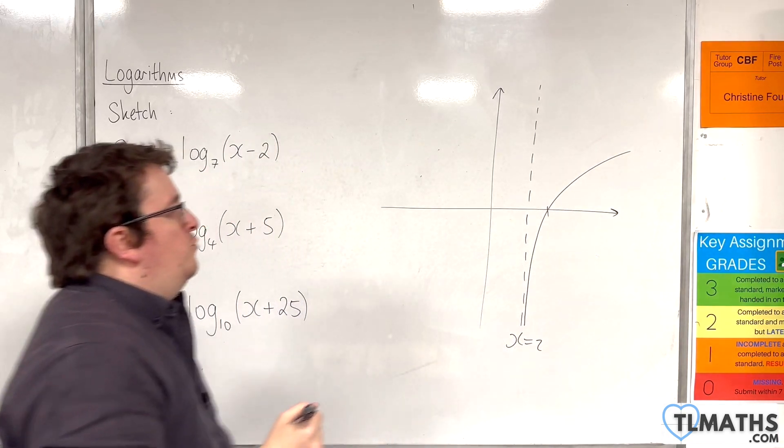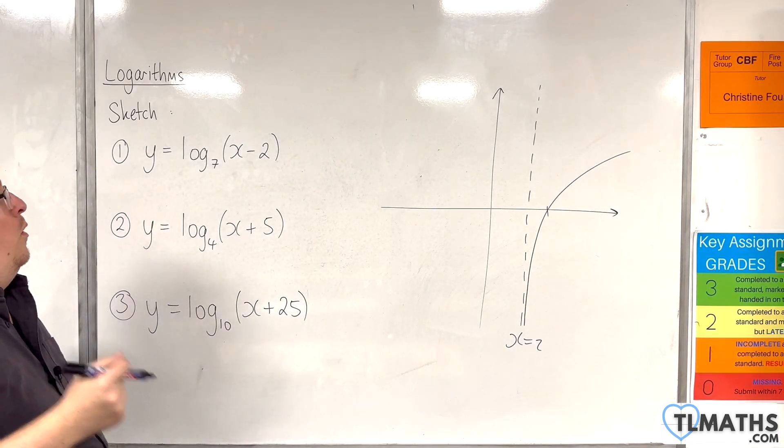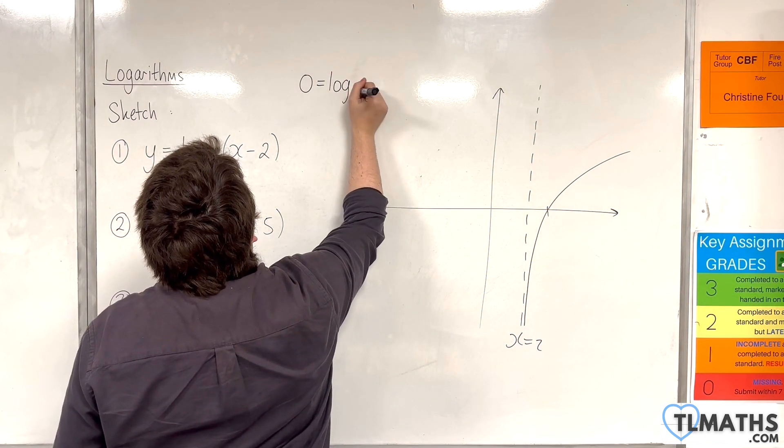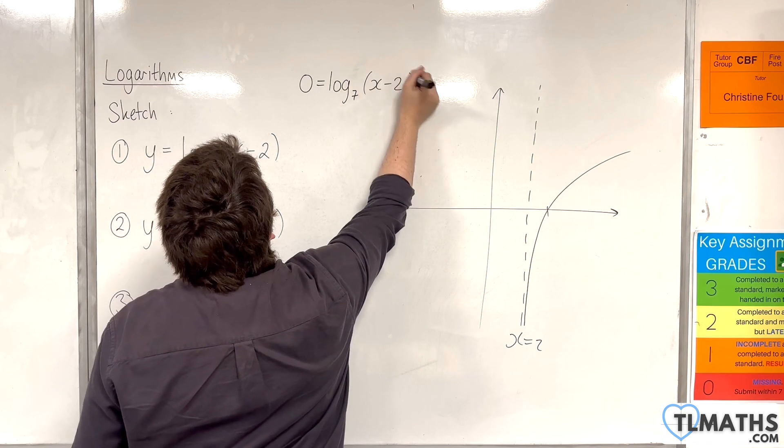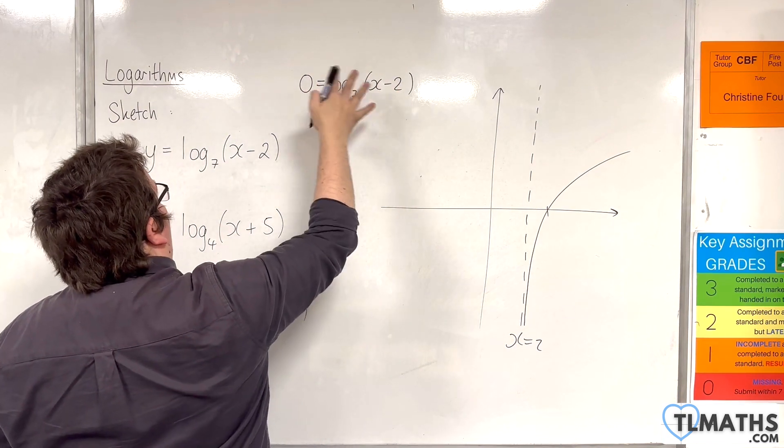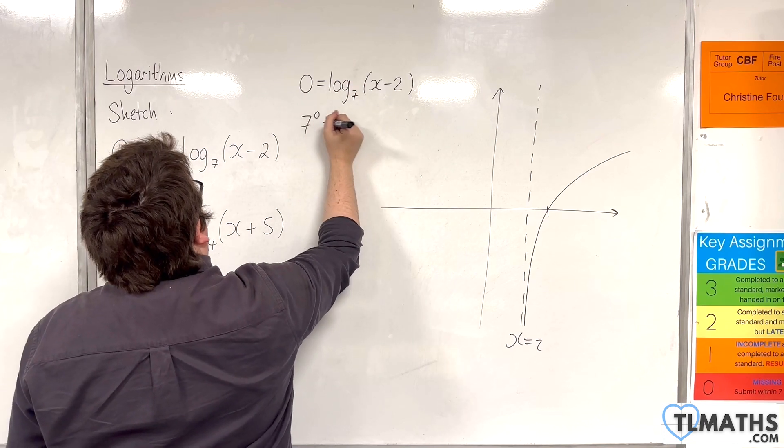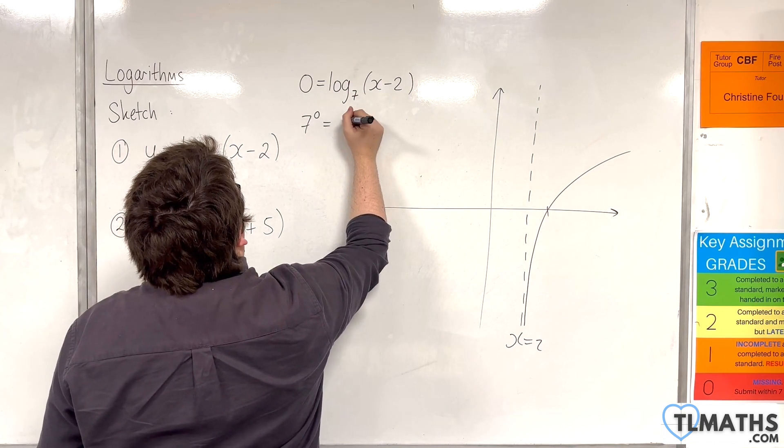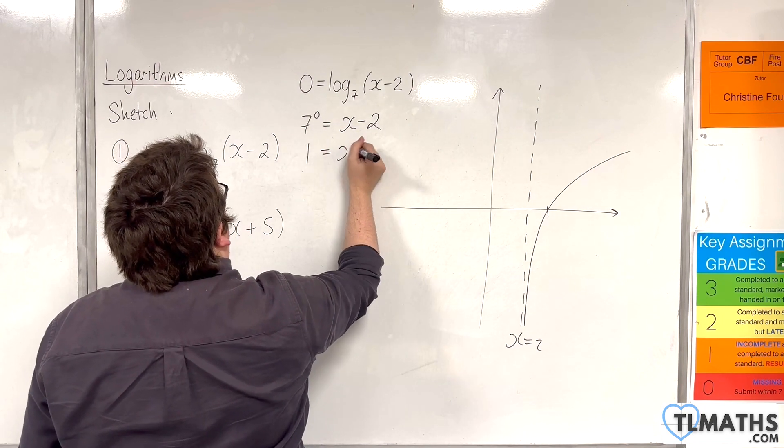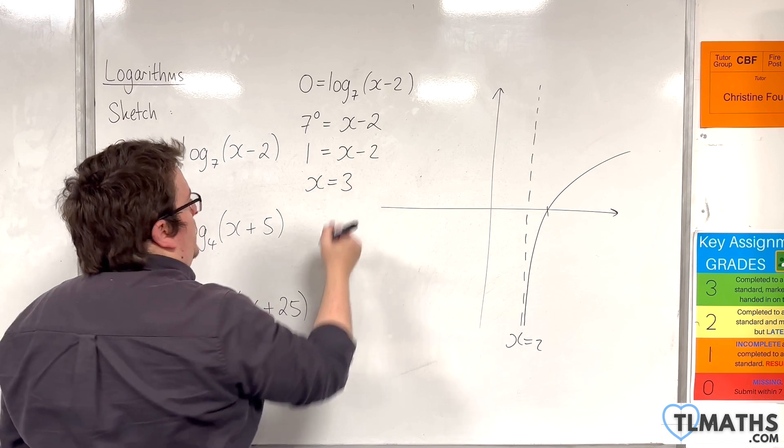And it will cross the x-axis when y is 0. So 0 equals log base 7 of x take away 2. So 7 to the power of 0, going from logarithmic to exponential form, 7 to the power of 0 is going to be x take away 2. So 1 is x take away 2, so x must be equal to 3.